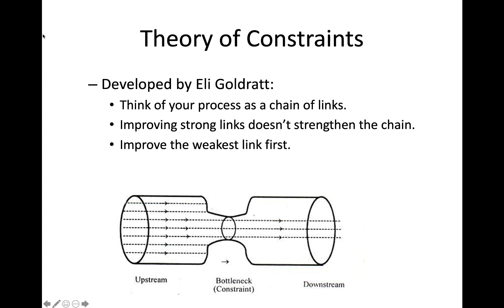If you improve the performance or efficiency of any step other than that bottleneck, you're not really going to improve the throughput of the entire process, because the throughput is constrained by that one single step. Our goal within a DevOps organization, as we build out software delivery processes, is to always be looking for the constraint within our organization, and to focus automation on the bottleneck processes first — those are the ones impeding our service delivery.